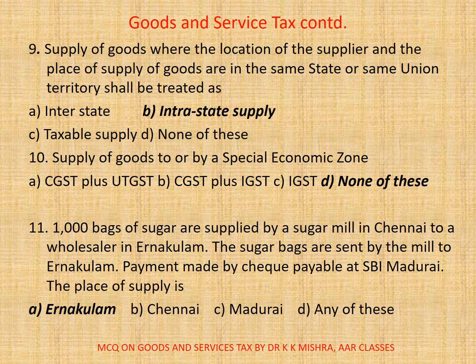Question 9: Supply of goods where location of the supplier and the place of supply of goods are in the same state or same union territory shall be treated as — A. interstate, B. intrastate supply, C. taxable supply, D. none of these. Here correct option is B: intrastate supply.